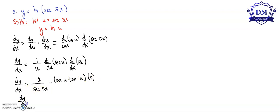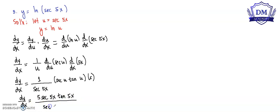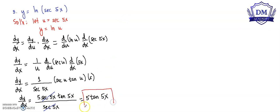So dy/dx is equal to 5 times secant 5x times tangent 5x, all over secant 5x. As you can see, we can cancel out the secant 5x, so our dy/dx will be 5 tangent 5x. This is our dy/dx.